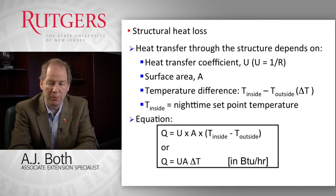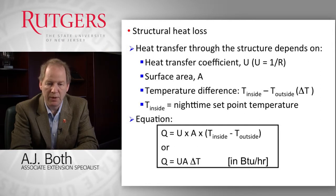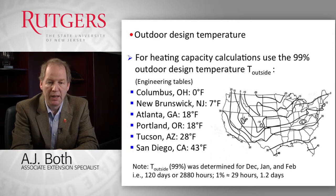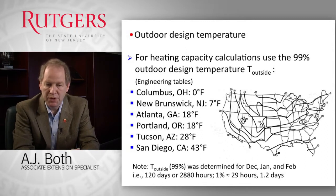We generally know the inside set point temperature and can calculate the surface area from the greenhouse design. The U-value is found from a table based on covering materials. The outside design temperature requires closer examination. Engineering tables for different locations provide the 99% design temperature needed for calculations, and alternatively a map of the United States with contour lines shows the 99% design temperature for different locations.